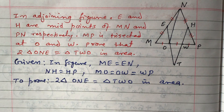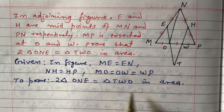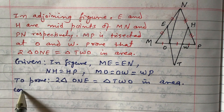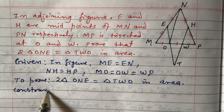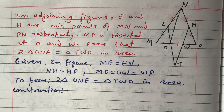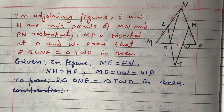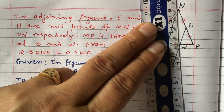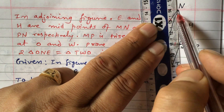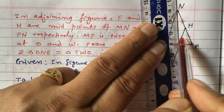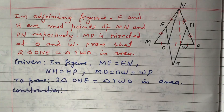For the construction, we will join N and W. Using a red pen so it is clear, we join N and W in the figure.